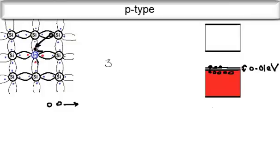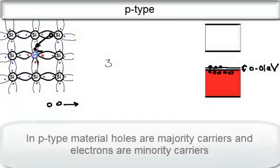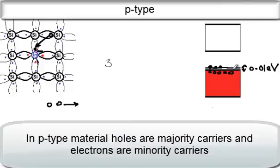In a p-type semiconductor, holes are the majority carriers. There are very few thermally generated electrons — electrons that jump the energy gap — and these are the minority carriers.